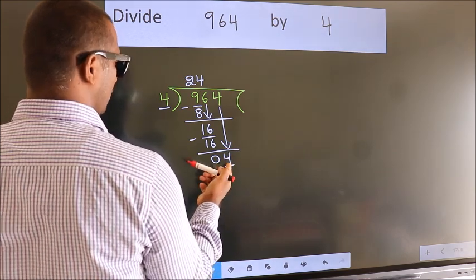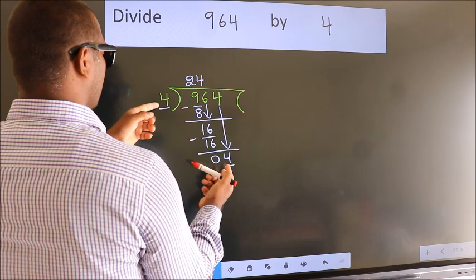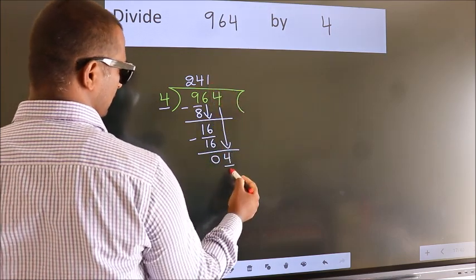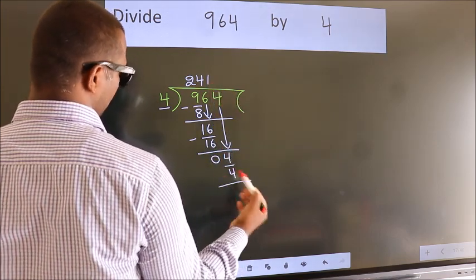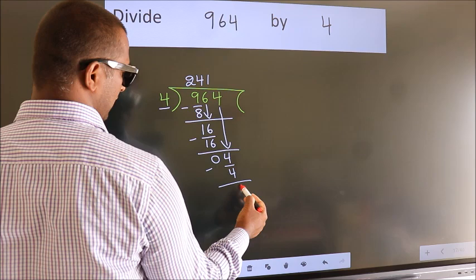When do we get 4? In 4 table. 4 ones, 4. Now we subtract. We get 0.